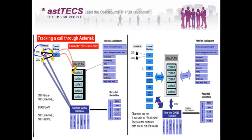To reach extension 2002 we again use the SIP channel module because a SIP protocol is used again. Once the SIP call is answered, we decide which codec has to be used to carry the voice, and then the Codec Translation API comes in.